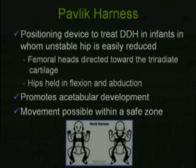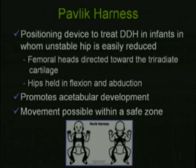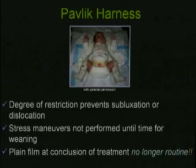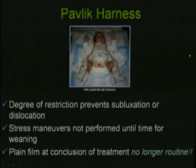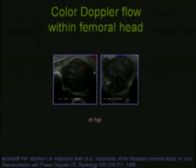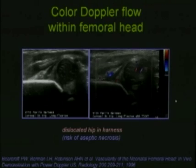For babies with an unstable but easily reducible hip, the Pavlik harness positioning device is used. The femoral heads are directed toward the triradiate cartilage with the hips held in flexion and abduction to promote acetabular development while allowing movement in a safe zone. Stress maneuvers are not performed until it is time for weaning. When the baby is in a harness, color flow Doppler images are obtained to monitor for aseptic necrosis — a known risk — confirming that color flow within the hip is preserved.